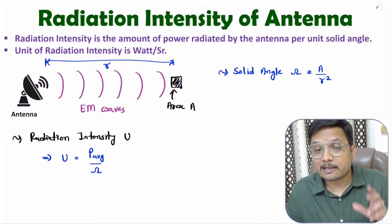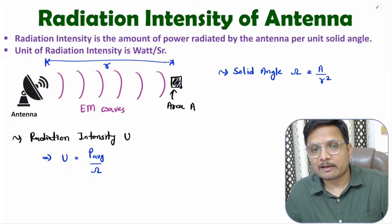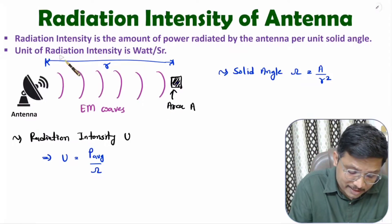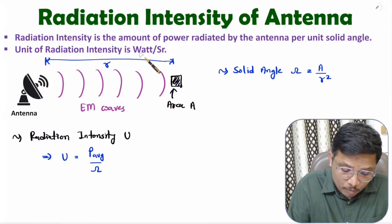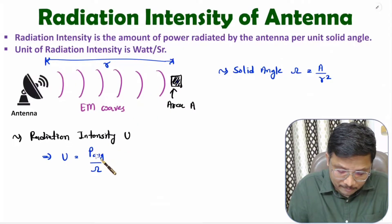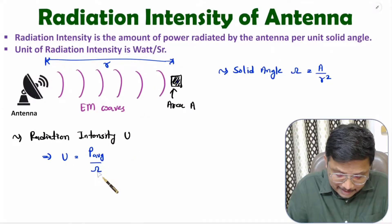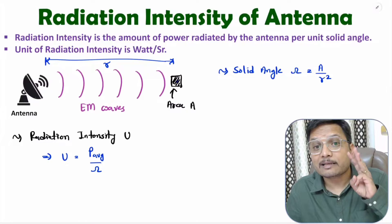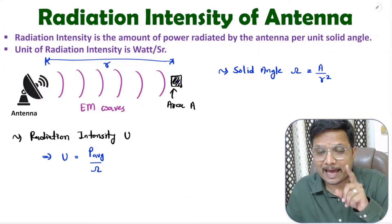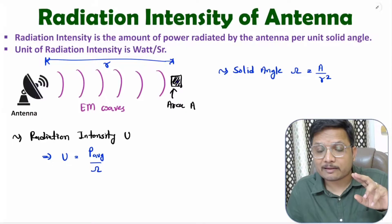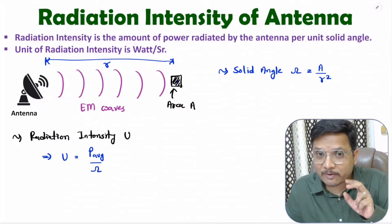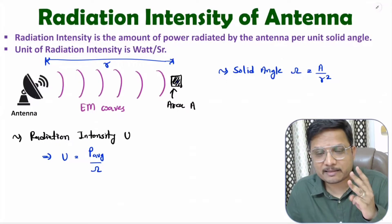Solid angle is a three-dimensional angle, and it is calculated in the form of steradian. The unit of radiation intensity is watt per steradian, where watt is the unit of power and steradian is the unit of solid angle. Solid angle is area divided by square of the distance — that is the three-dimensional angle.